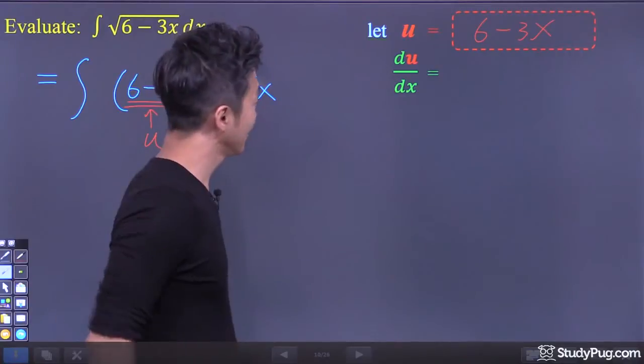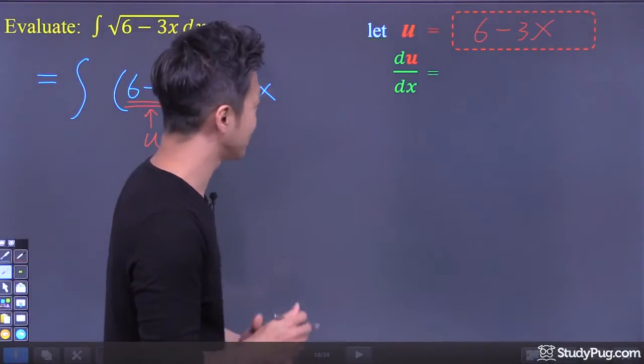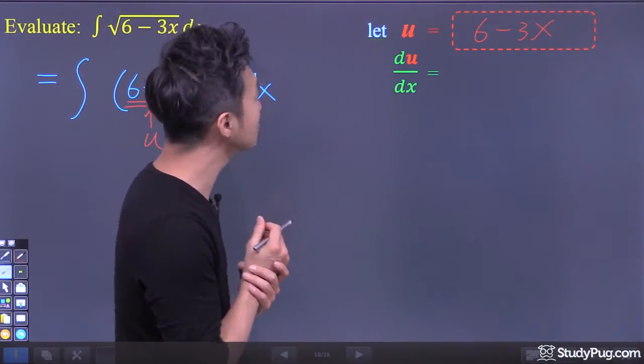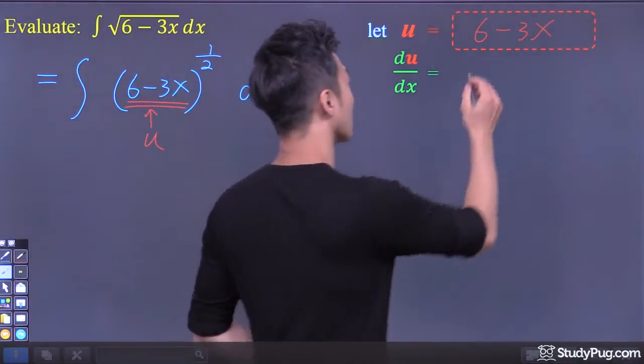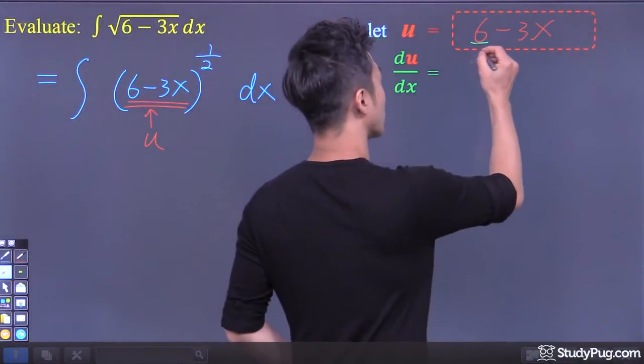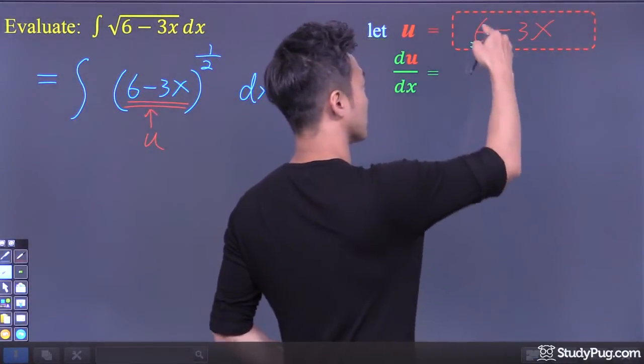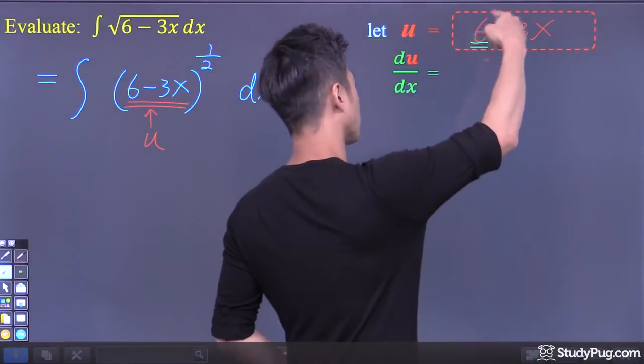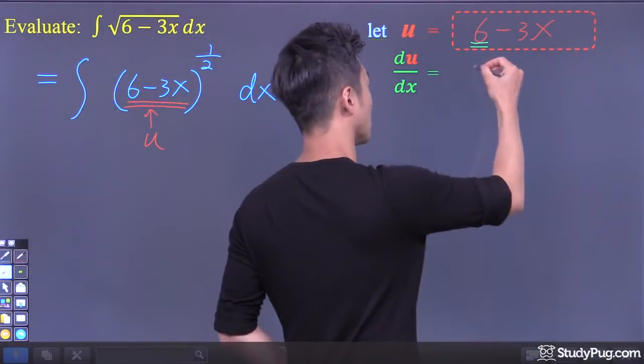Let's find the derivative of this u function and hopefully come up with something that also appears in our integrand. So the derivative of the first term — the derivative of any constant is 0.